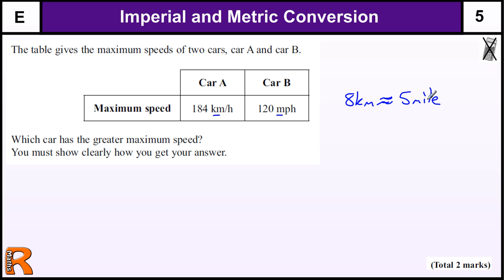Or, probably the better one is to work out how many 5's go into 120 miles, and multiply up the 8 to change the miles into kilometers, which is what I'm going to do now.